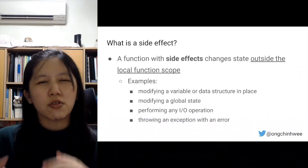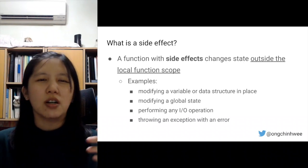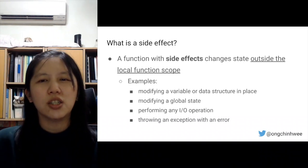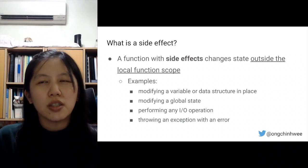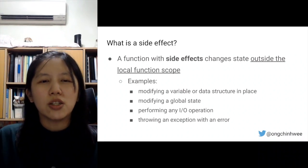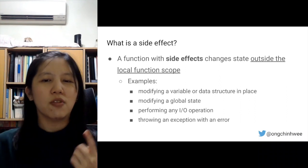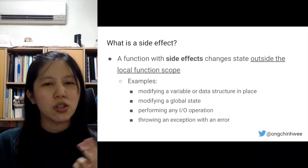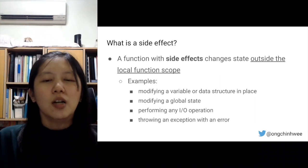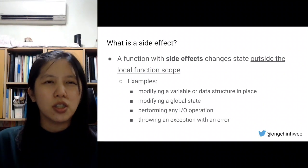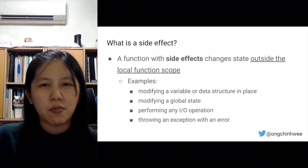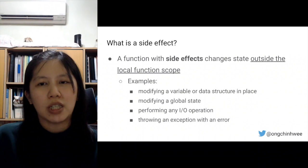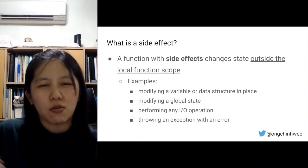A function with side effects changes state outside the local function scope. Based on the analogy, the local function scope is the oven. Examples include modifying a variable or data structure in place, modifying global state, performing any I/O operation, and throwing an exception with an error — because that effectively throws an exception outside the local function scope.